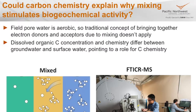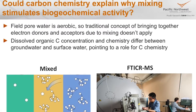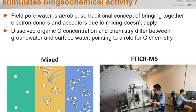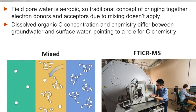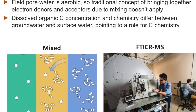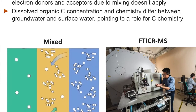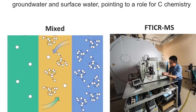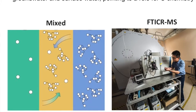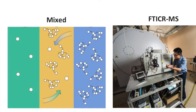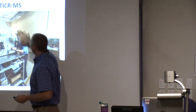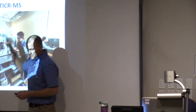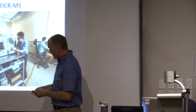A conceptual model emerged: groundwater has a low concentration of favorable carbon chemistry; surface water has a higher carbon concentration but low activity in both cases. When mixed together, you get stimulated activity. We wanted to test this conceptual model with real field data using FT-ICR mass spectrometry.